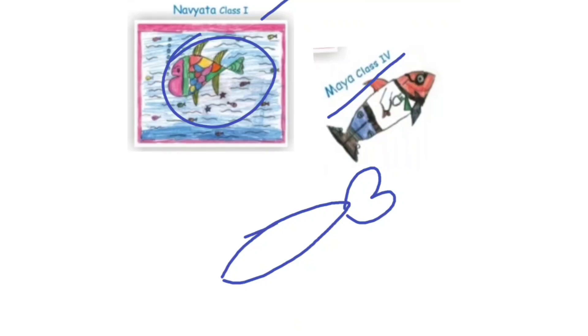When you think of fishes, what shapes come to your mind? If I have to draw a fish using different shapes, I will draw: first an oval shape for the body, then a triangle for the tail, triangles for fins, another triangle for the mouth, and a circle for the eyes. Now the question asks: try to use a square and a triangle to draw a fish.